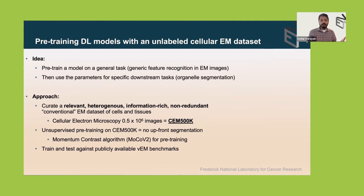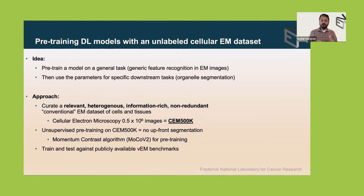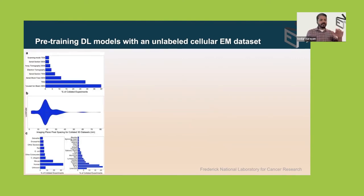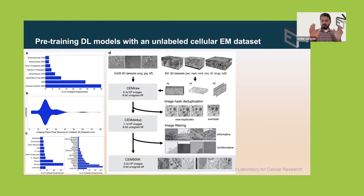Last year we published a paper testing this hypothesis. We curated a relevant, heterogeneous, information-rich, and non-redundant EM dataset of conventional EM both 2D and 3D. This was run through a pipeline that created half a million 2D EM image patches. We performed unsupervised pre-training — details are in the eLife paper — and tested it against available benchmarks. The dataset sampled many different imaging approaches, different resolutions, and different tissue origins.